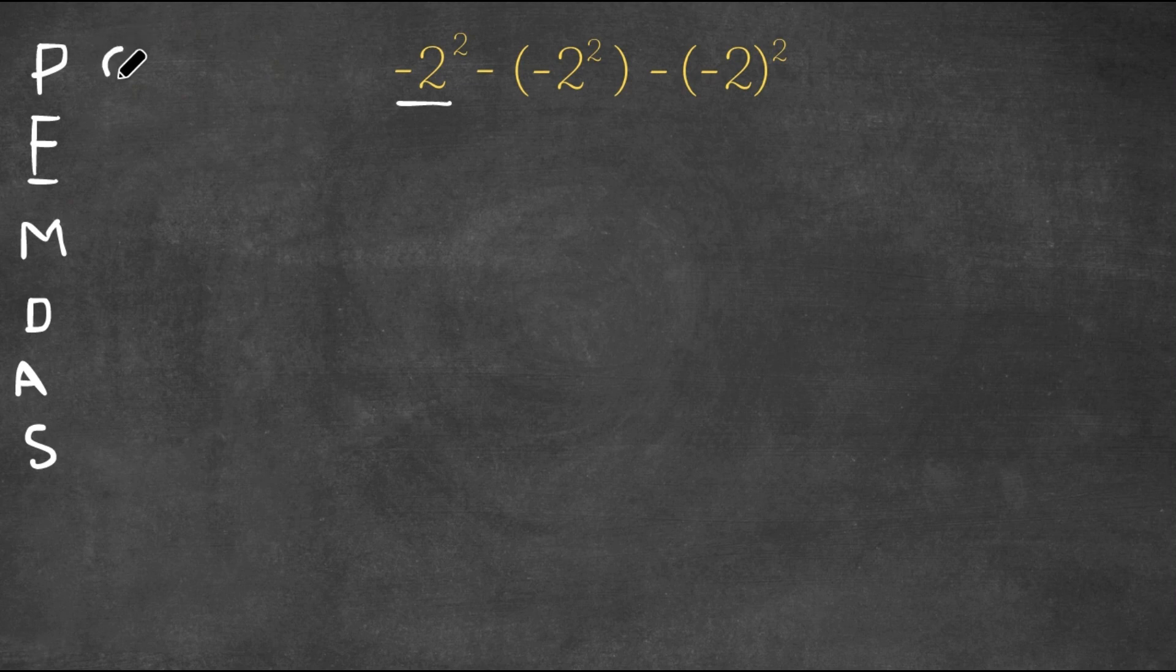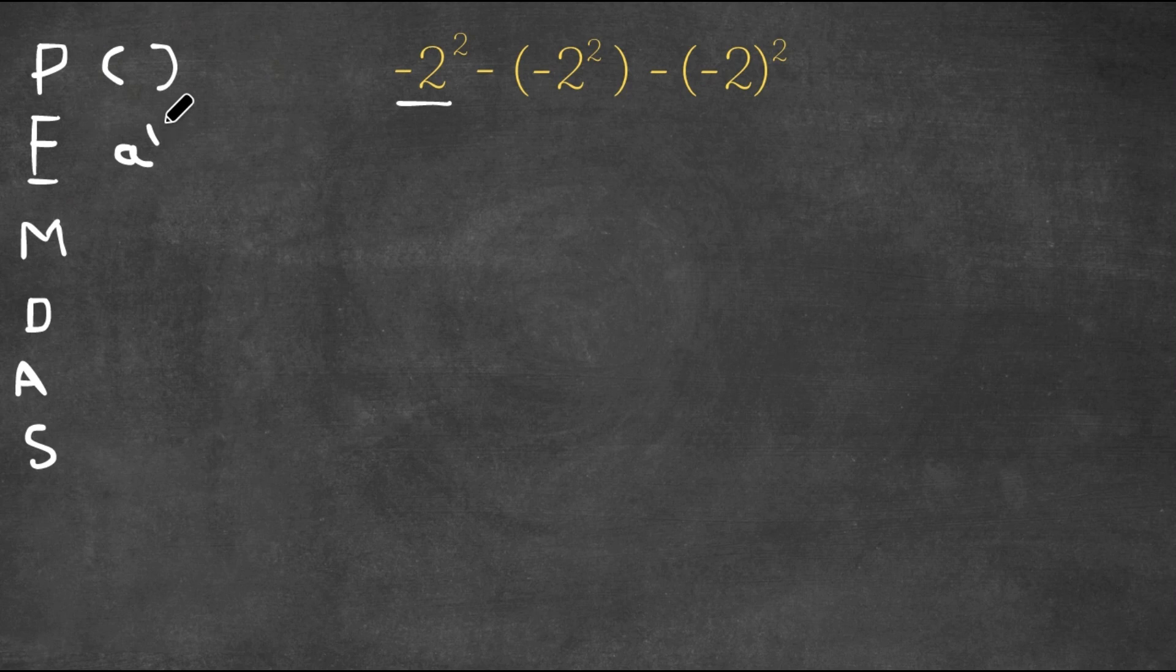So P stands for parentheses. E stands for exponents. M stands for multiplication. D stands for division. A stands for addition. And S stands for subtraction.